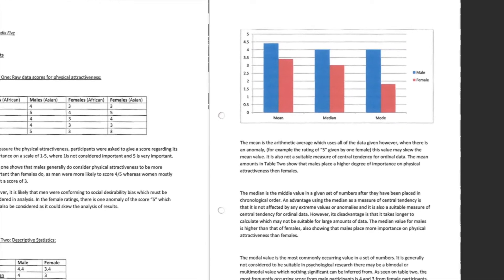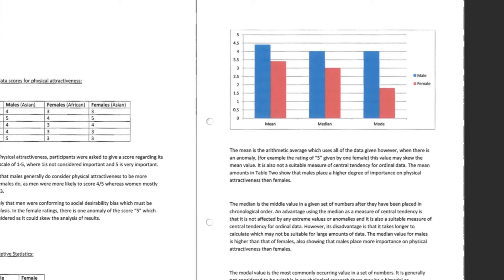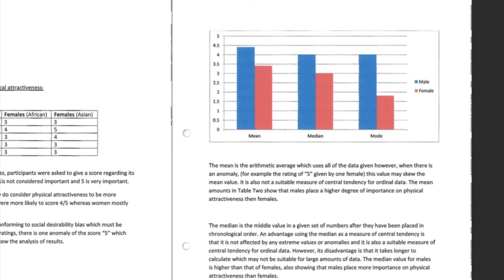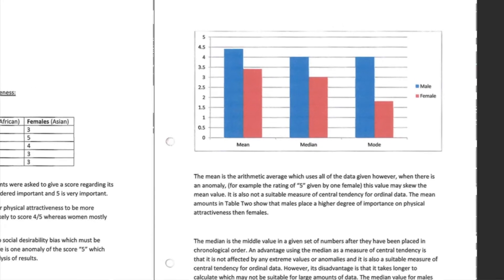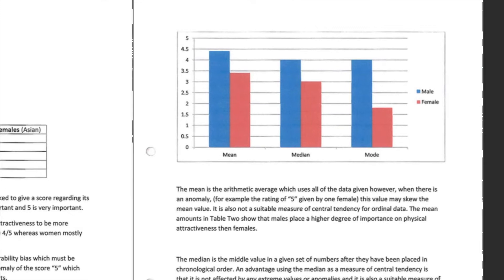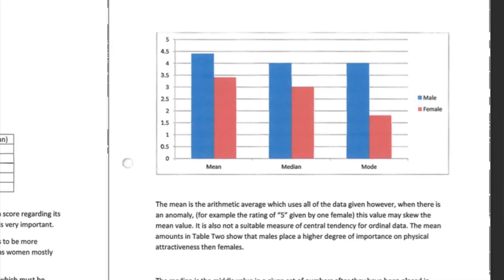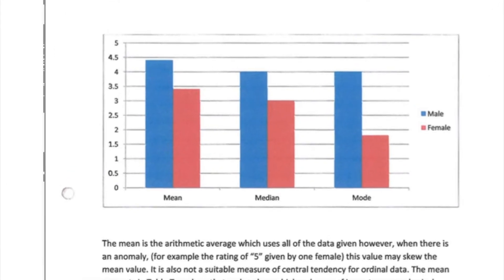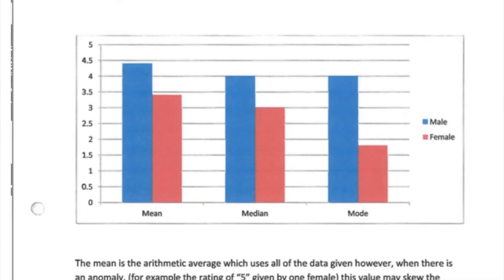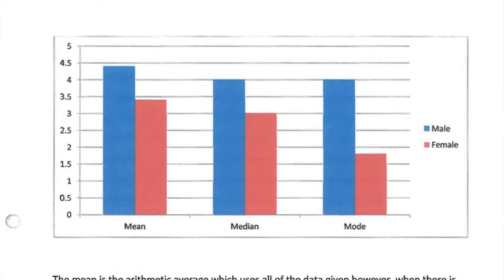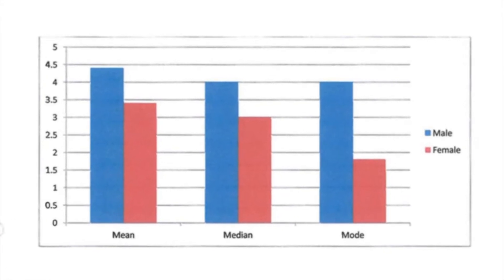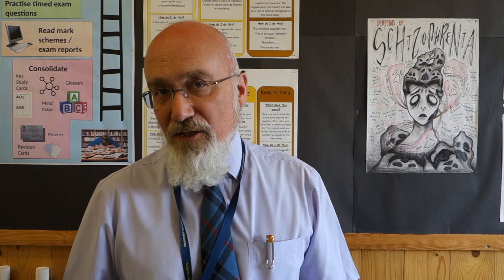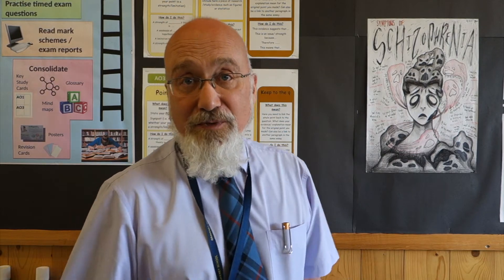The y-axis represents a score out of five for how much males and females each rate physical attractiveness as important in a partner. The mean for males is nearly 4.5 out of five — they really want to see their partner be attractive — while females still care about attractiveness but are less concerned. Worth noting: this graph is missing a labeled y-axis and a title, which should always be included.